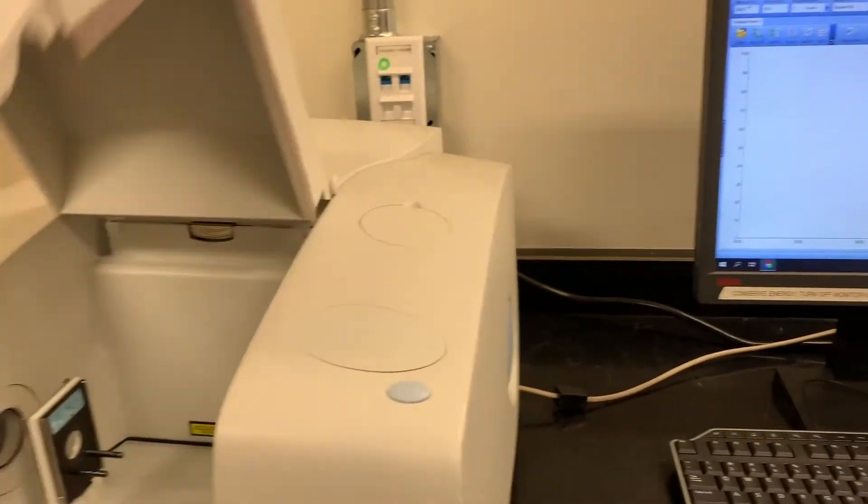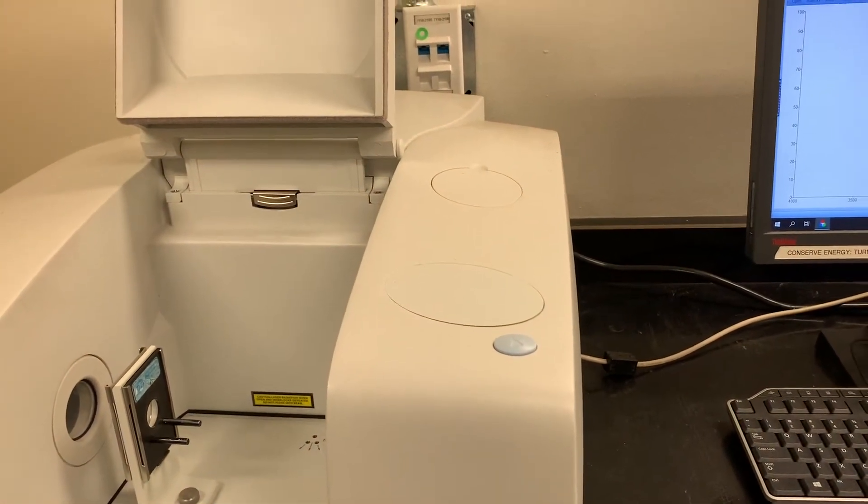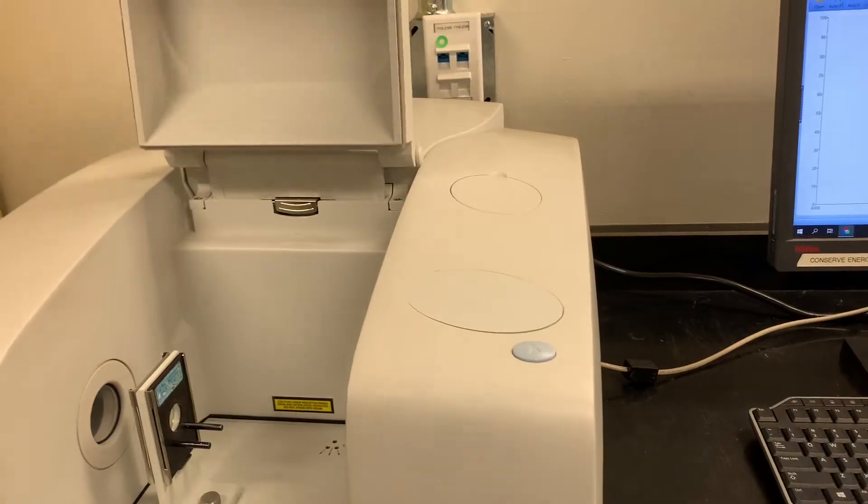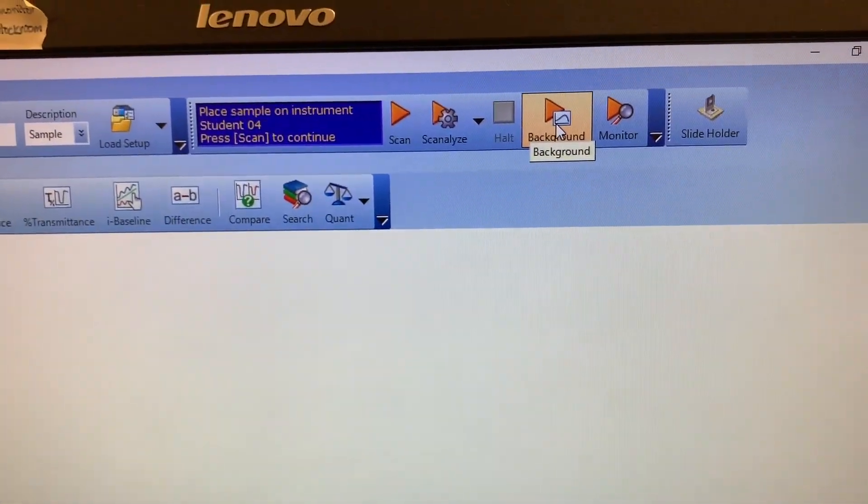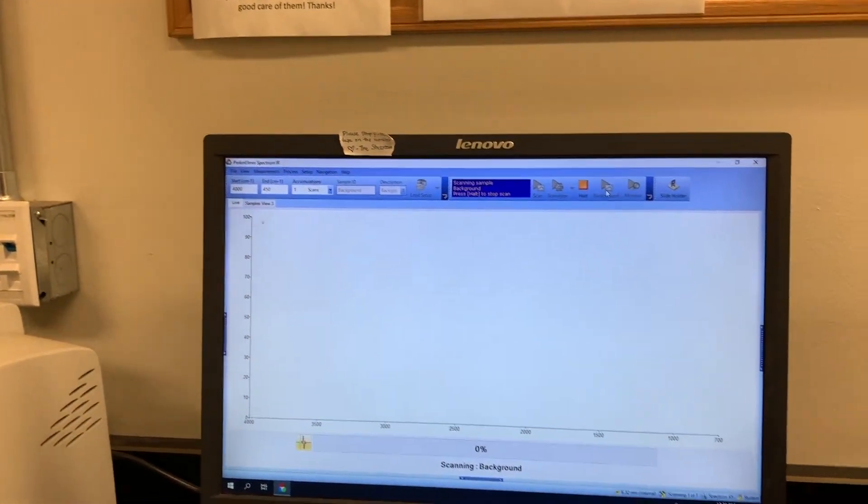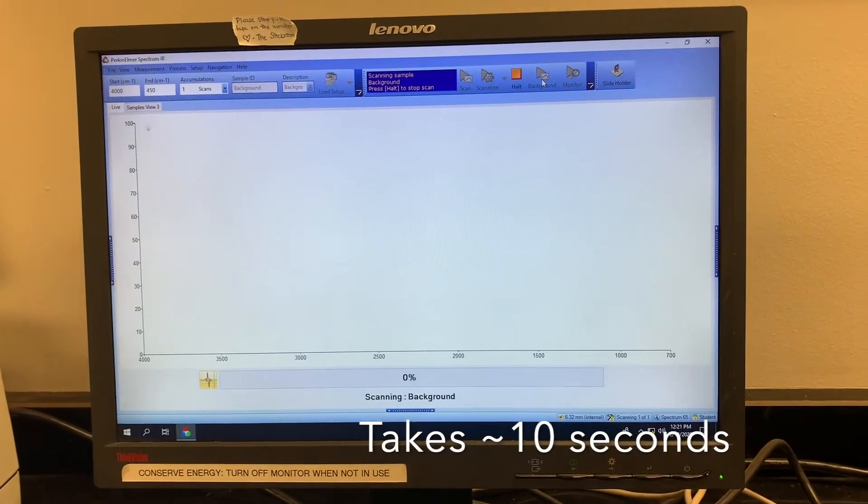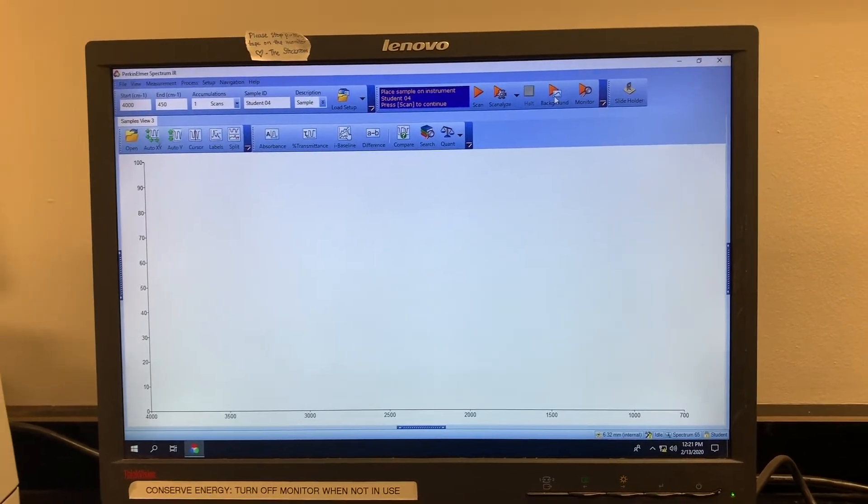So first we want to get a background scan. There's definitely CO2 in the atmosphere that will interfere with your spectrum. The software should already be open. There is a background button, you just click that guy after making sure it's empty in there. There, there's the background scan, and that'll just be deleted from your stuff.